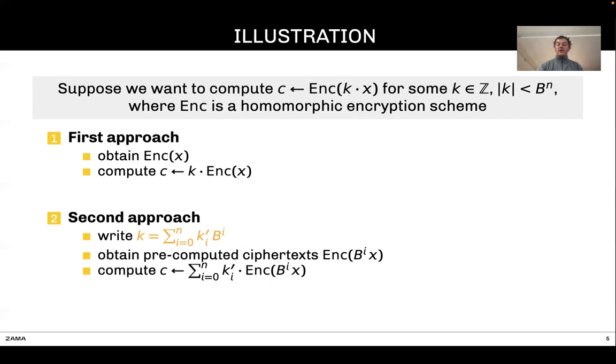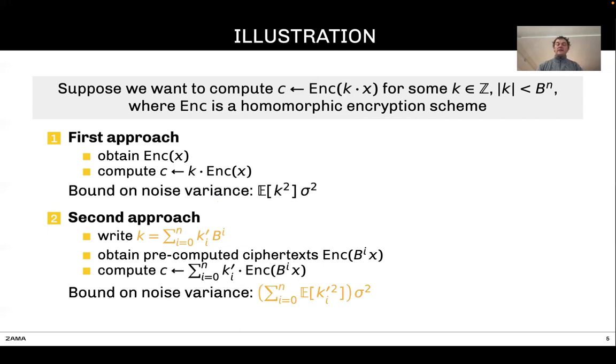What's the advantage of the second approach compared to the first one? The main advantage is the noise. In the first case, the noise in the resulting ciphertext is proportional to k squared. Whereas in the second approach, the noise becomes proportional to the square of the digit sum. That quantity is smaller than the first one, so regarding noise, the second approach is much better.